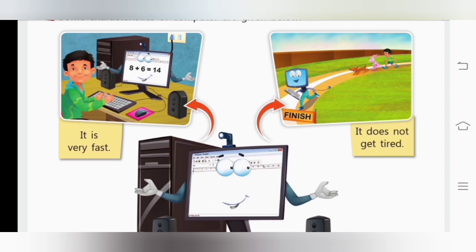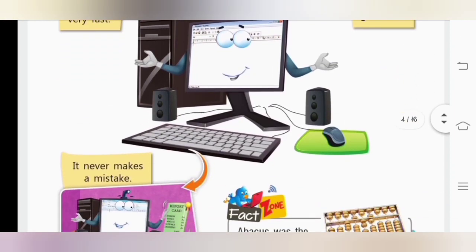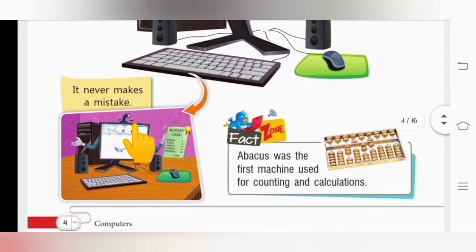Now our third characteristic is it never makes a mistake. For example, when we try to solve a sum, we might not get the correct answer. But the computer always gives us the correct output.